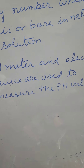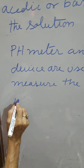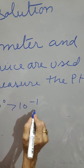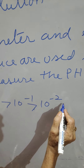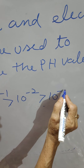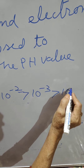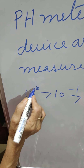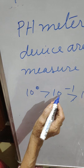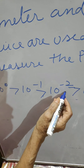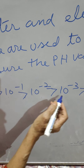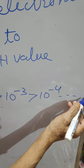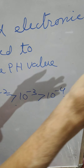Also remember that 10^0 is greater than 10^-1, which is greater than 10^-2, greater than 10^-3, greater than 10^-4, and so on. When we move up to 7, after that the concentration goes on decreasing. So pH increases as H ion concentration decreases.